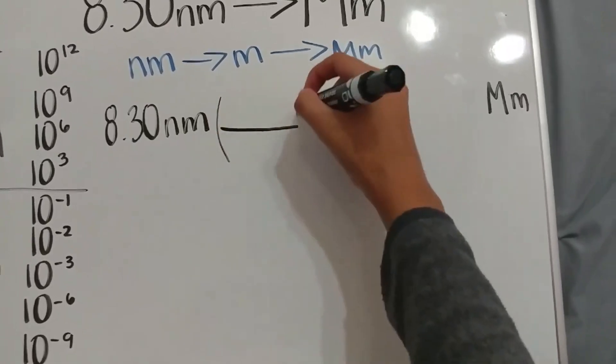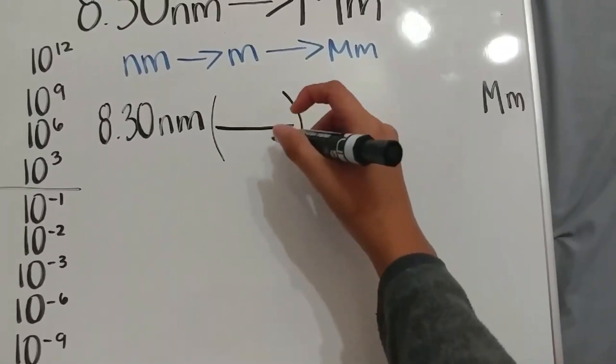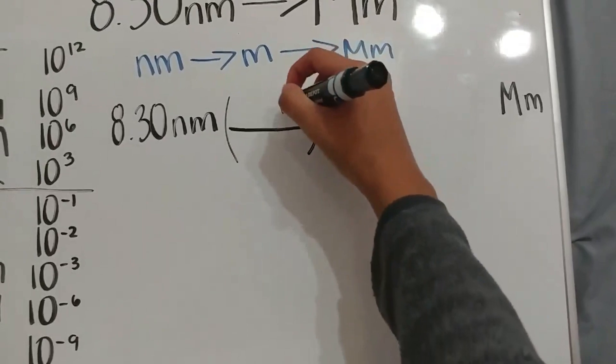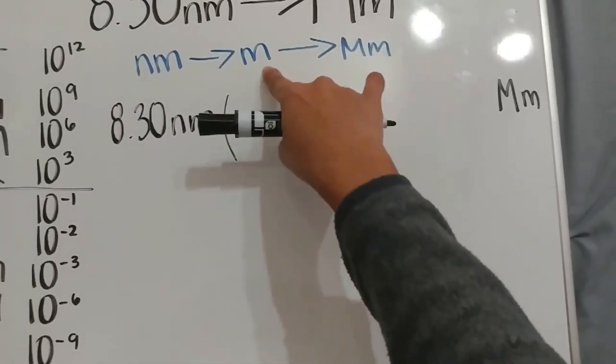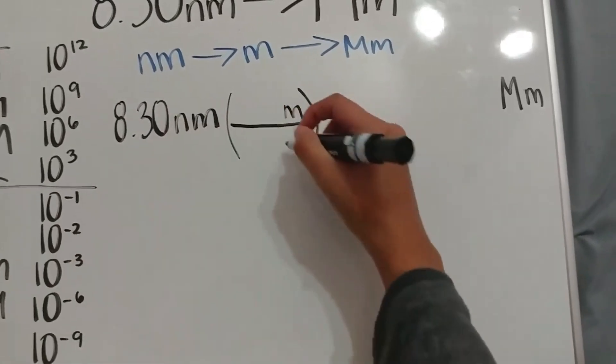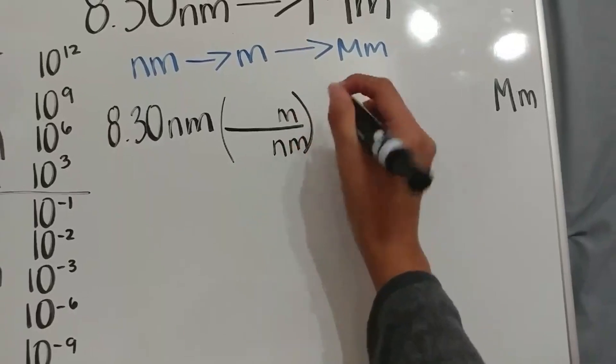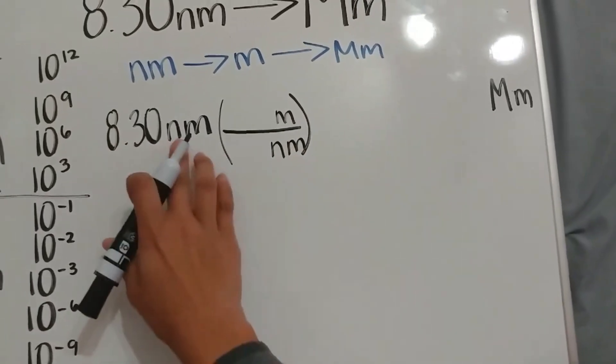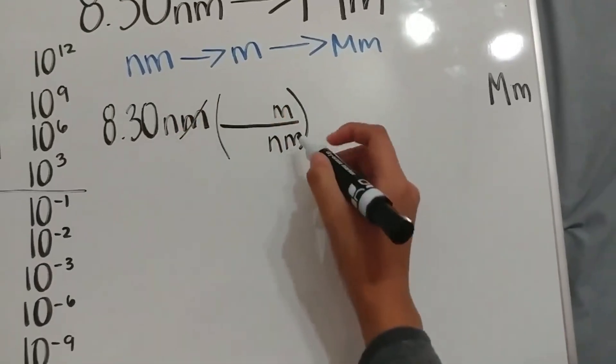So since we need to convert from nanometers to meters, we would write our conversion factor as having meters at the top, because we're trying to look for meters, and to cancel out properly, we have to have nanometers at the bottom, so this properly cancels out.